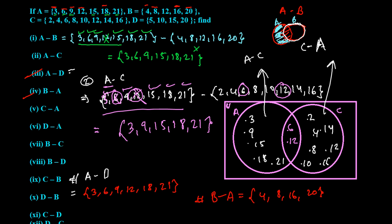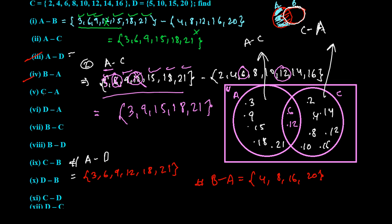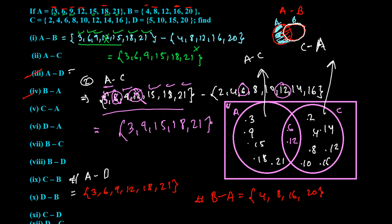Next is C difference A — found in C but not in A. C is {2, 4, 6, 8, 10, 12, 14, 16}. 2 is not in A — take it. 4 is not in A — take it. 8 is not in A — take it. 10 is not in A — take it. 12 is in both — skip. 14 is not in A — take it. 16 is not in A — take it. So C difference A is {2, 4, 8, 10, 14, 16}. It's very easy and simple.